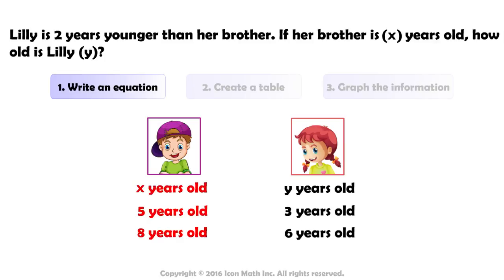Regardless of what her brother's age is, we subtract two to determine Lily's age. So Lily's age, y, is equal to her brother's age, x, minus two.